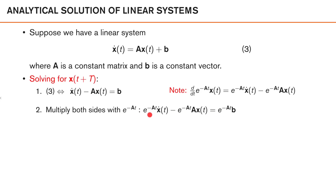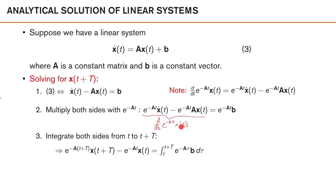Based on this remark, the idea is to multiply both sides of the expression with e to the power of minus At. What we get is that on the left-hand side, this is the time derivative of e to the power of minus At times x of t. Since it is easy to compute a time integral of a time derivative, we integrate both sides from t to t plus T. On the left-hand side, we just get the endpoints of this function: the function evaluated at t plus T minus the function evaluated at t. On the right-hand side, we get the integral of e to the power of minus A-tau times the constant vector b, d-tau, from t to t plus T.